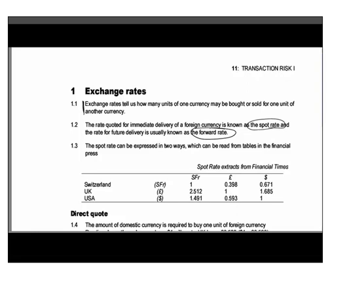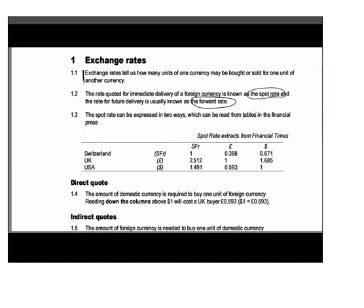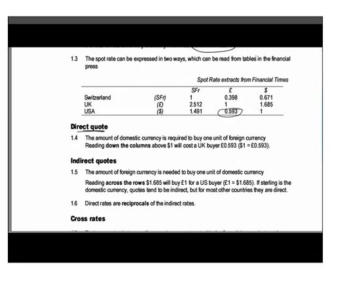You may see exchange rate tables that allow you to read off the price of one currency in terms of another. A direct quote is the amount of your currency needed to buy one unit of foreign currency. Looking at the dollar-sterling rate, one dollar costs 0.593 pounds — that is our direct quote. As a UK-based firm, it costs 59.3p to buy one dollar. The indirect quote is how much of the overseas currency is required to buy a unit of your own currency: 1.685 dollars will buy one pound.